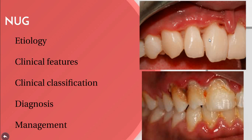The typical odor of acute necrotizing ulcerative gingivitis is fetid. A fermentation odor inside the mouth ultimately develops which may be extremely unpleasant. Teeth appear to be slightly extruded and are sensitive to pressure, or have a woody sensation — they are slightly movable and the patient is unable to eat properly. The gingiva may become superficially stained with a brown color.